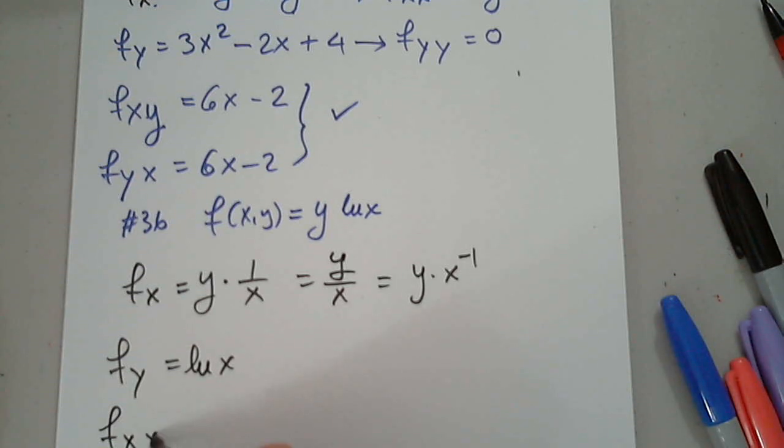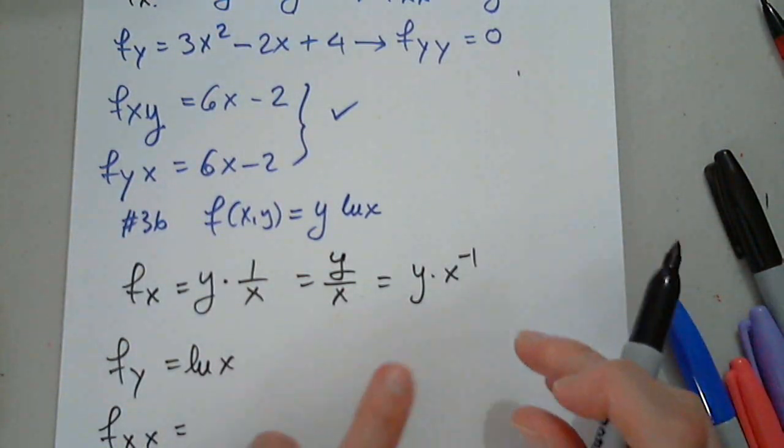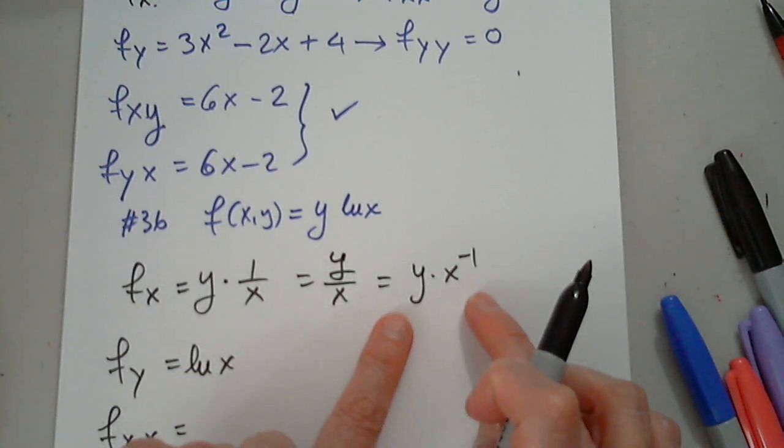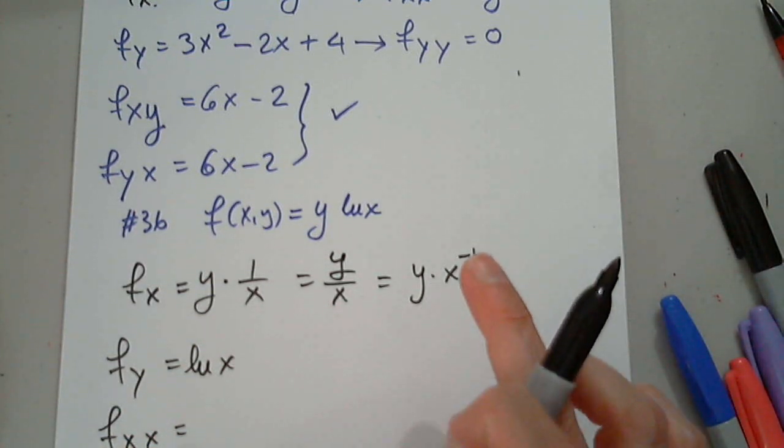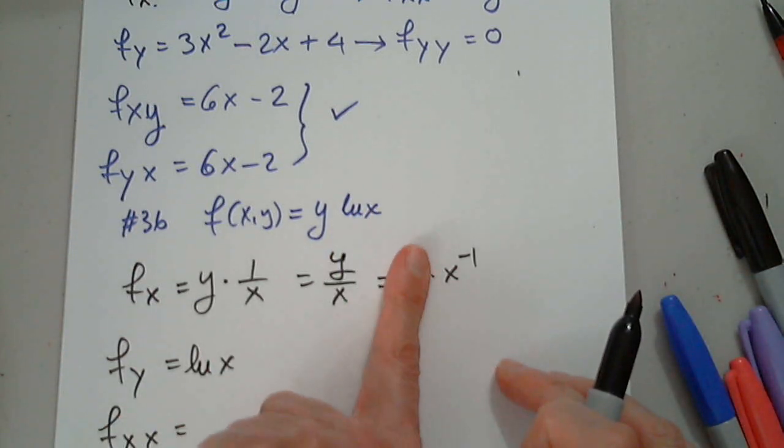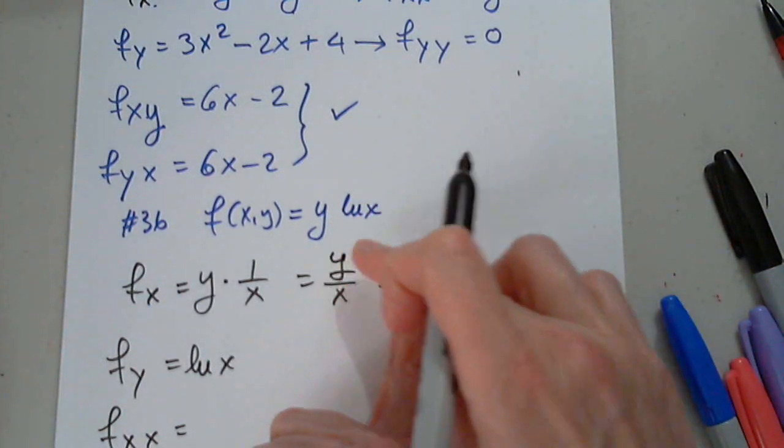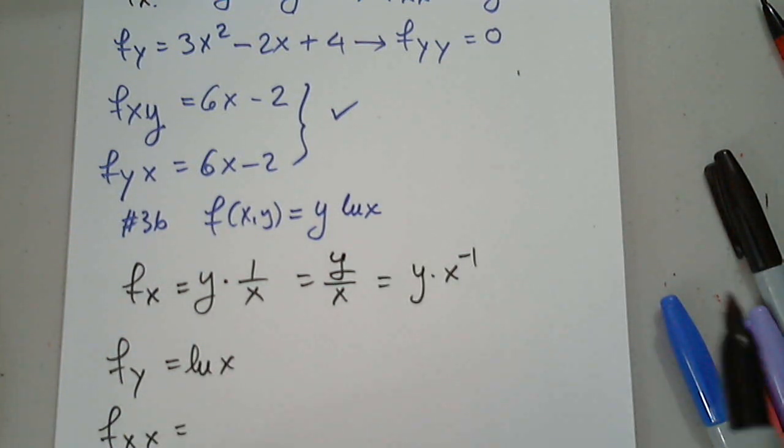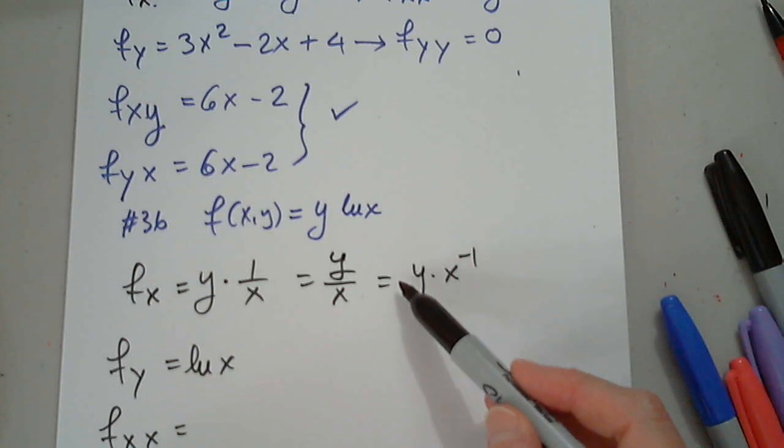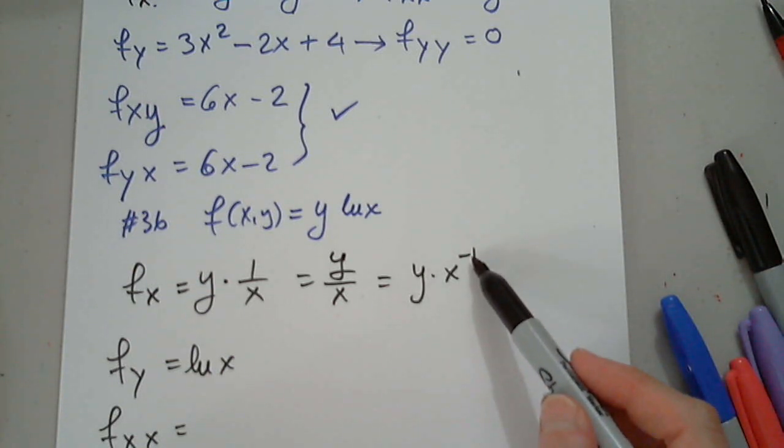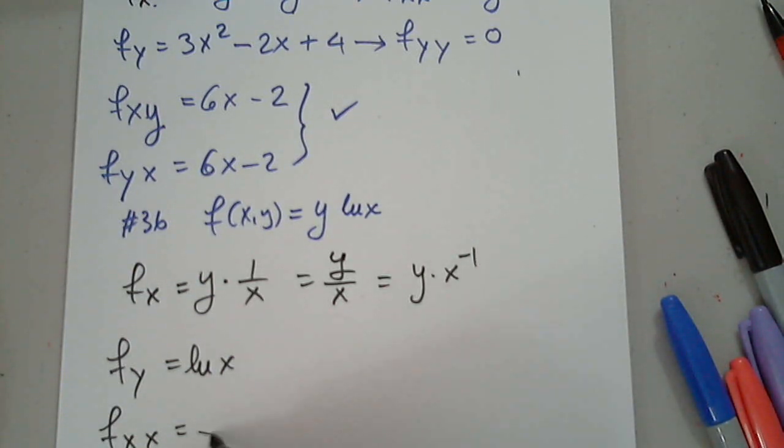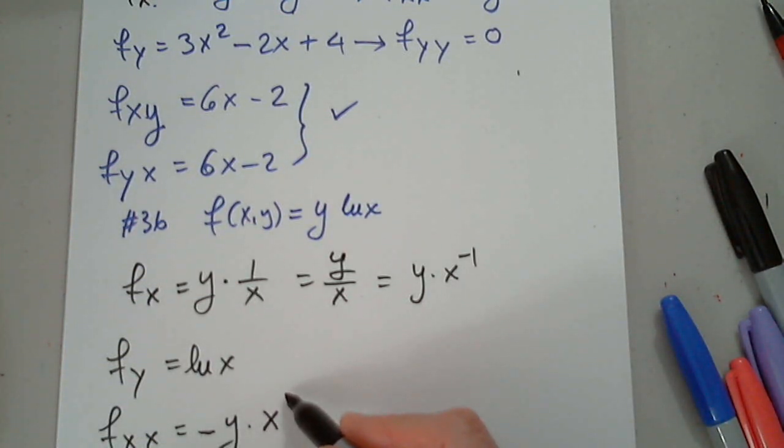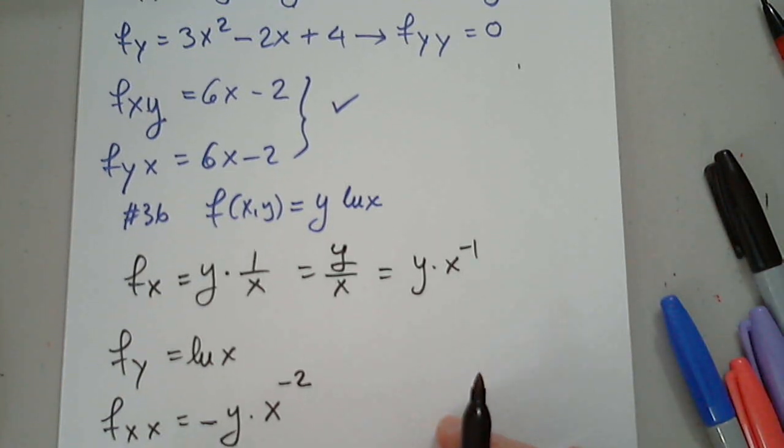Now, we want to find fxx. So now that's why I prepared this like this. I don't want it this way. I don't want it this way. This is easier to differentiate. We are differentiating, again, this quantity with respect to x. Negative y times x to which power? Negative 2. That's it. That's it. Perfect.